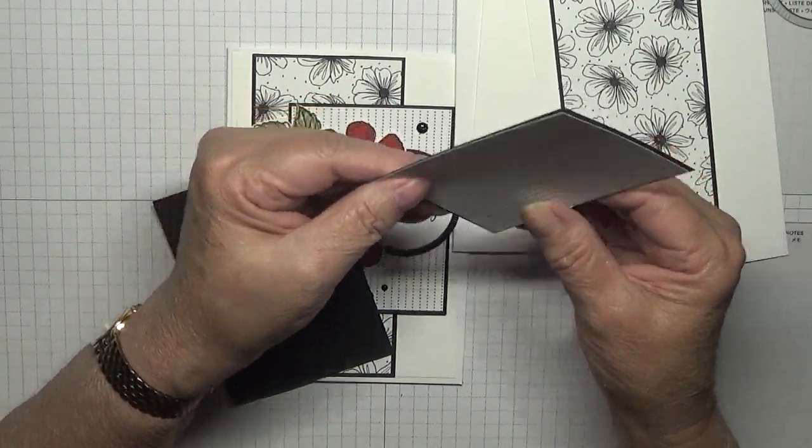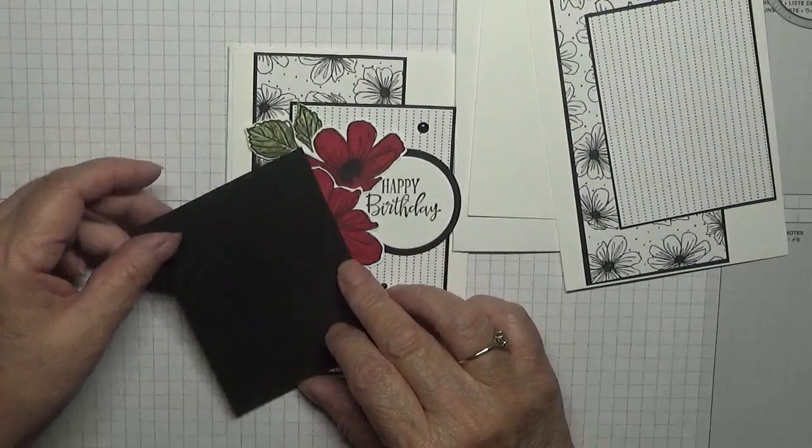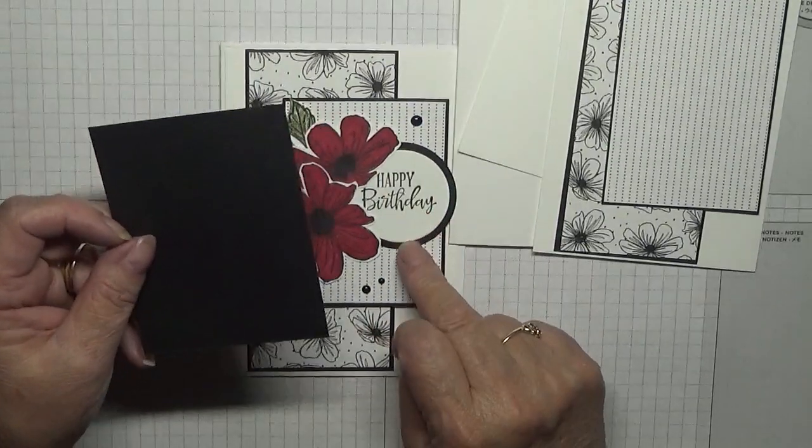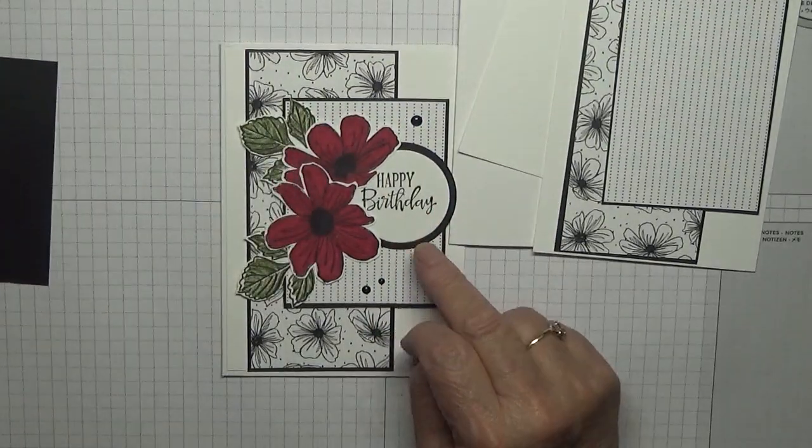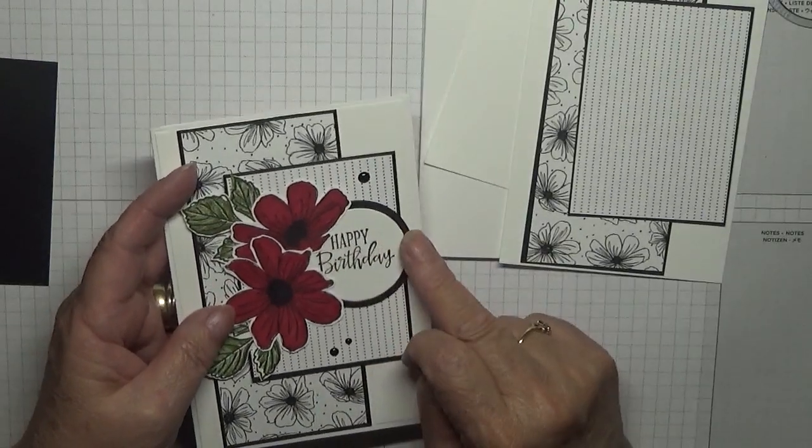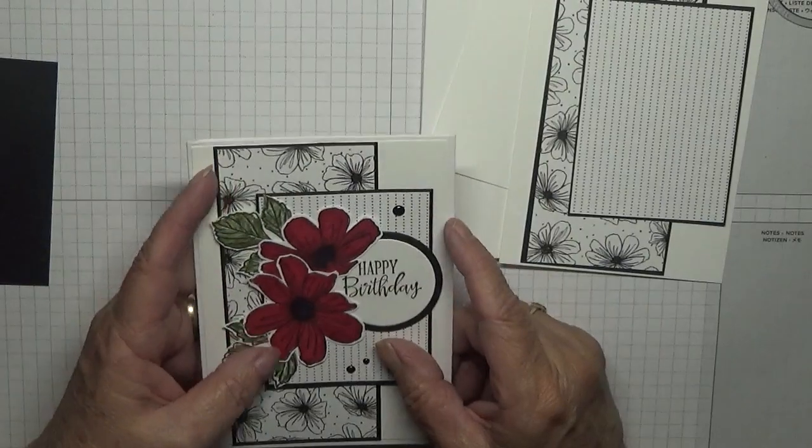It's got a very fine border and that will sit on there like that. Then I have a piece of black to cut out the black circle, which I'm using the Layering Circle dies for, and I need to cut out the white one as well.